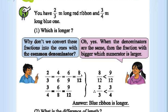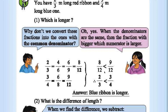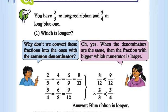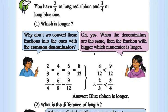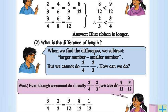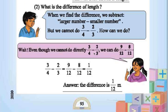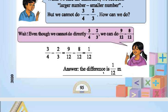Correcting that: it becomes 8 by 12 and 9 by 12. 9 by 12 is longer than 8 by 12. So 3 by 4 is greater than 2 by 3, or 2 by 3 is less than 3 by 4. We need to make denominators equal. We can also find the difference in length: 3 by 4 minus 2 by 3 is 9 by 12 minus 8 by 12, which is 1 by 12. The difference is 1 by 12.